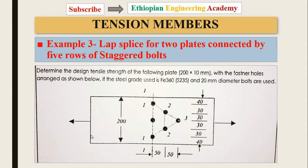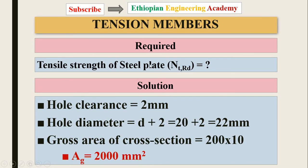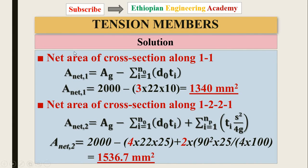For the staggered bolt arrangement, this is the tension force direction along the longitudinal axis, and these are the transverse spacings and dimensions between holes. When calculating the net area, we consider paths: 1-1-1, 1-1-1-2-1, and 1-1-1-2-3-2-1. The given values are: bar width 100 mm, bar thickness 10 mm, bolt diameter, number of bolts, number of rows, staggered pitch distance, gauge distance, ultimate strength, yield strength, and partial safety factors. The hole clearance is 2 mm, so the hole diameter is 22 mm, and the gross cross-sectional area is 2000 mm².